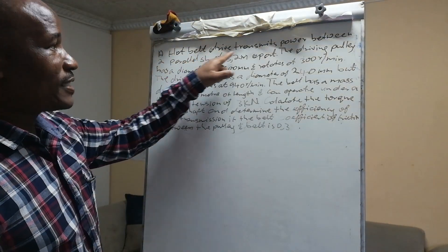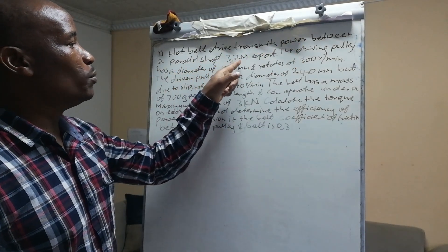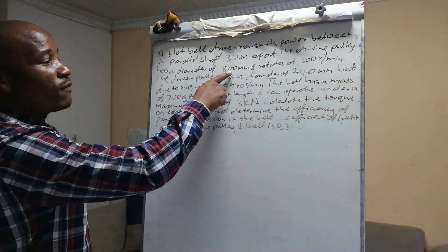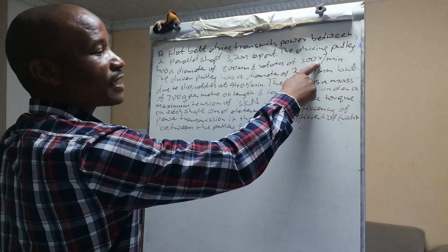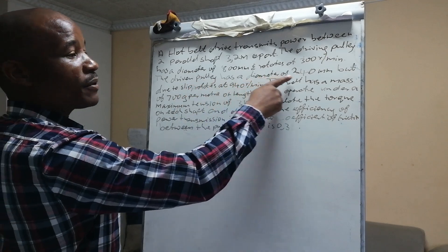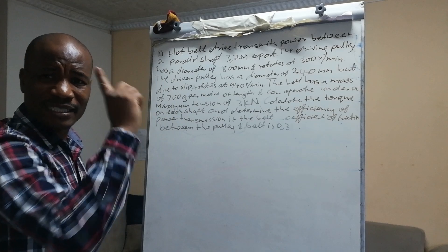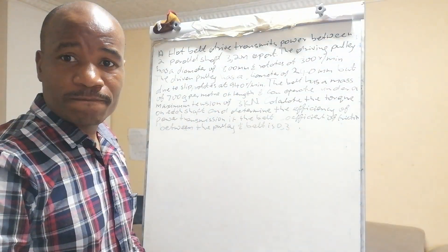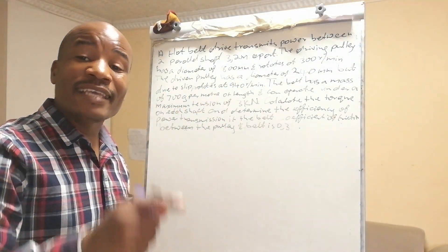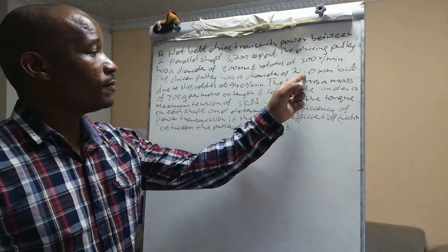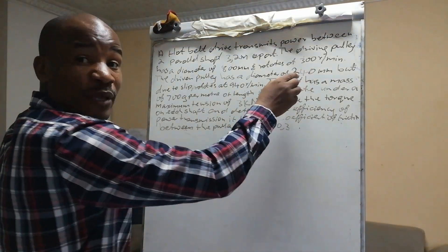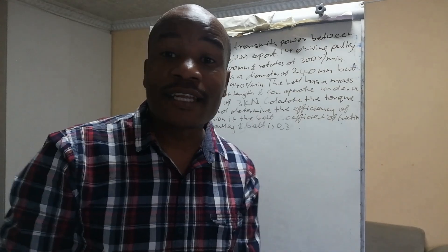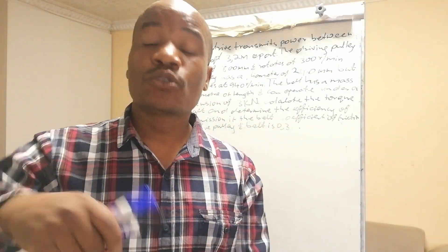A flat belt drive transmits power between two parallel shafts 3.2 meters apart. The driving pulley has a diameter of 800 mm and rotates at 300 rpm. The driven pulley has a diameter of 240 mm but, due to slip, rotates at 940 rpm. This tells us that slip occurs at the smaller pulley, so the smaller pulley will have a smaller angle of contact — making it our limiting factor.